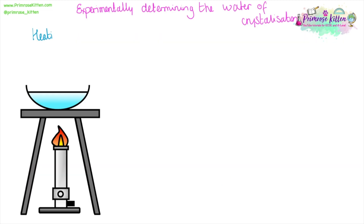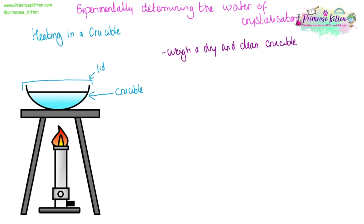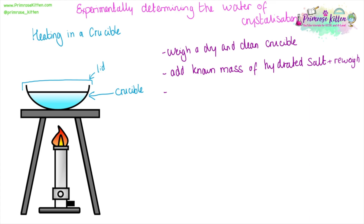Just like we saw on the video, we can experimentally determine the water of crystallization. You need to heat things in a crucible — slightly different to what I've got here — and depending on your exact method, you may or may not need a lid. The first stage is to weigh a dry and clean crucible. Dry is really important here. You can add a known mass of your hydrated salts, but it's really important to weigh it again to make sure everything has gone from the weigh boat into the crucible and you get the exact weight.